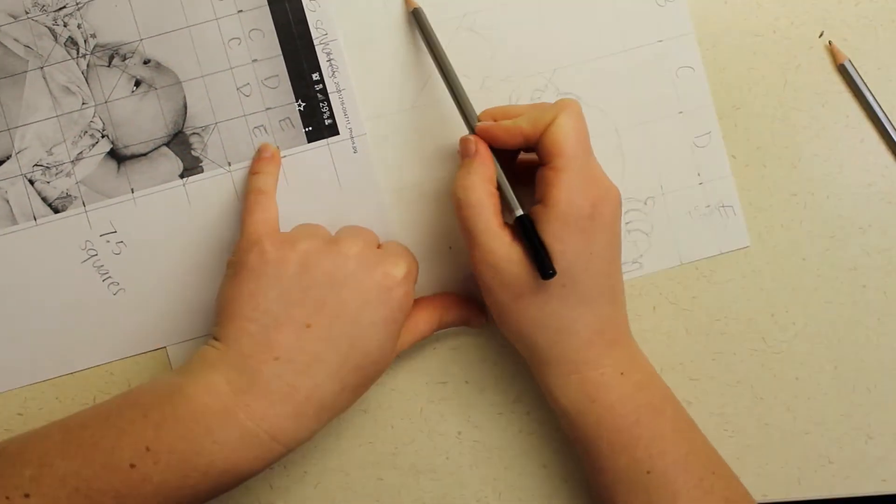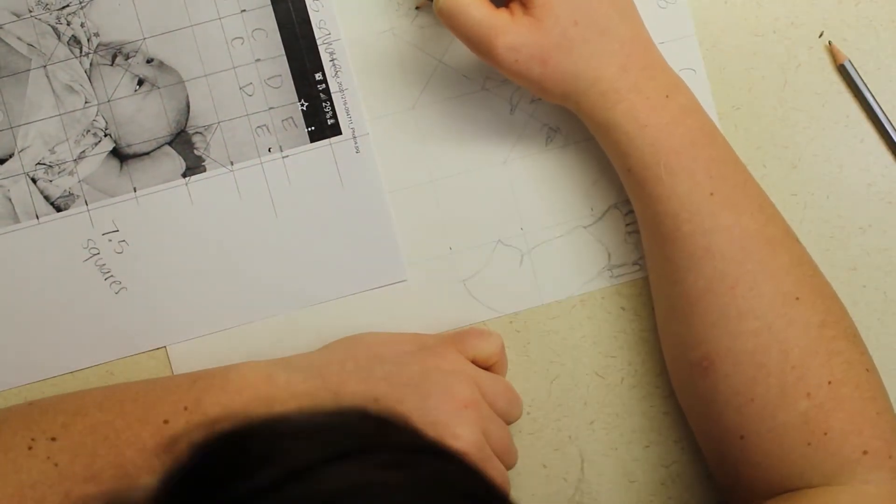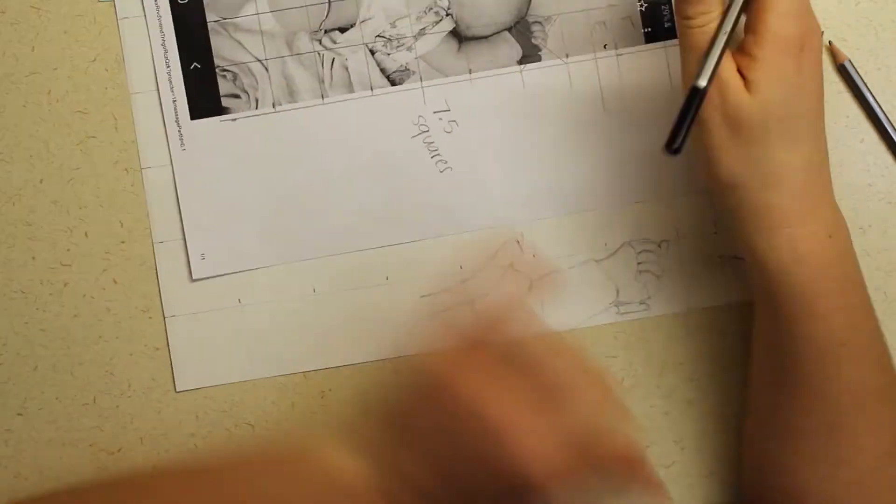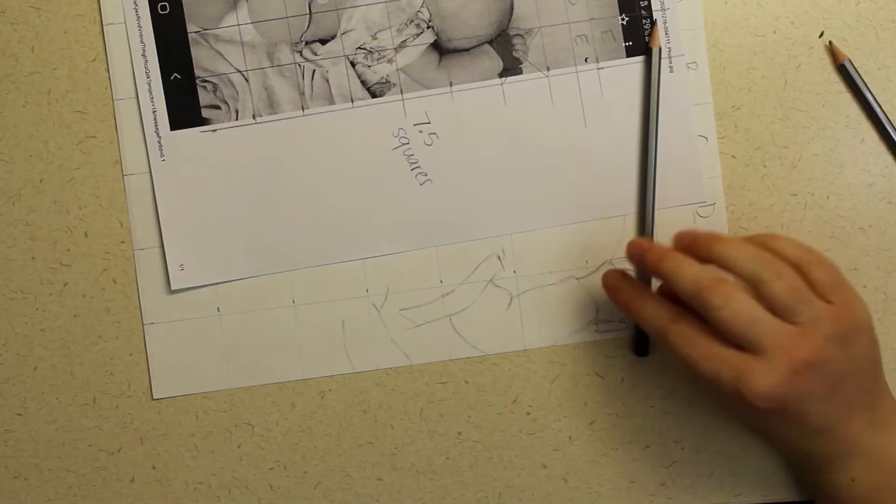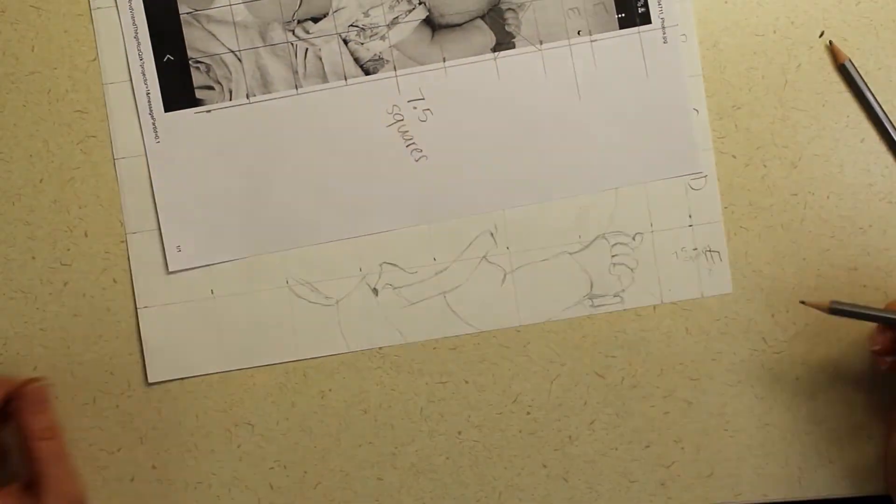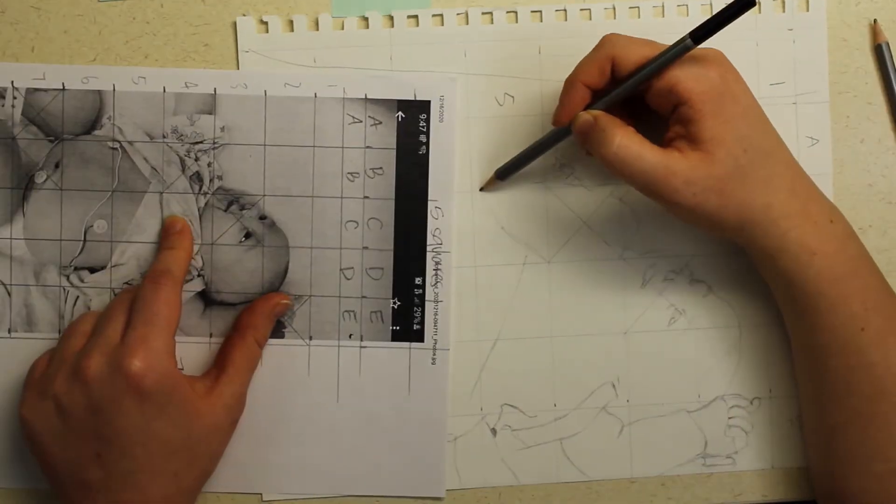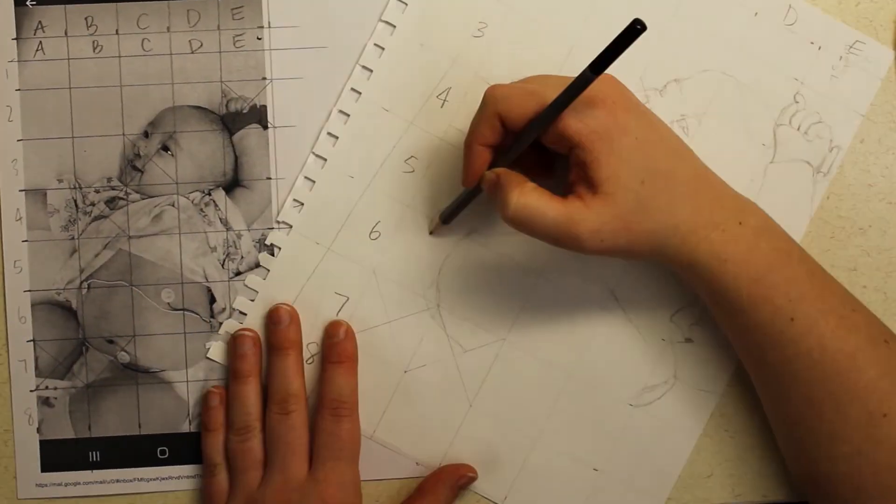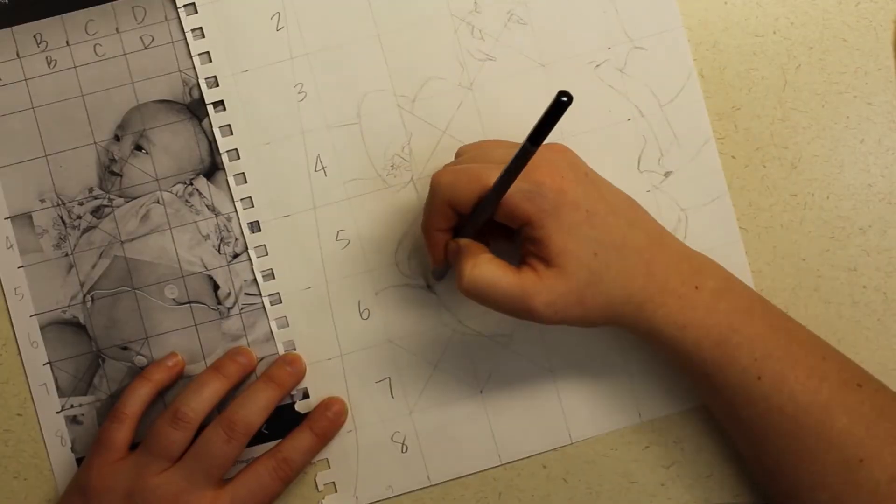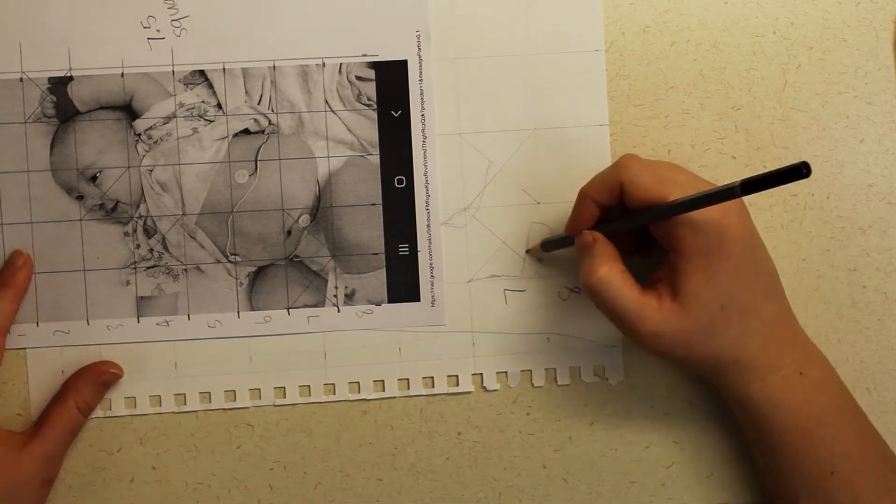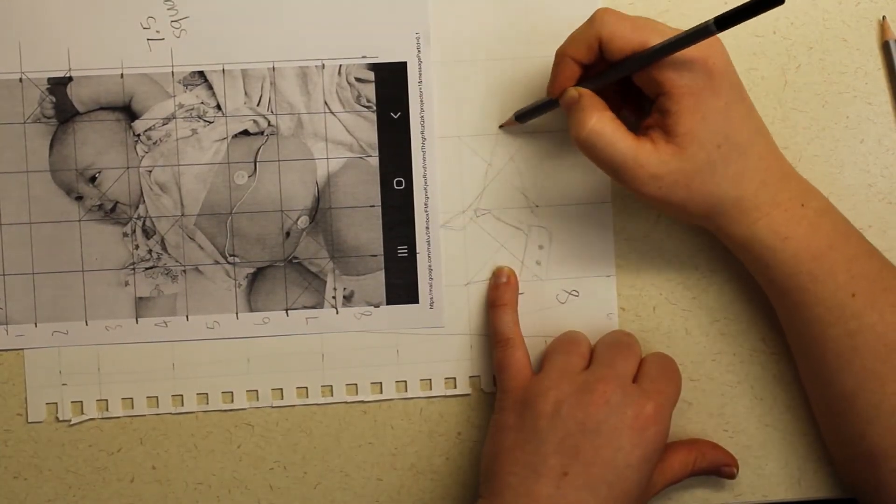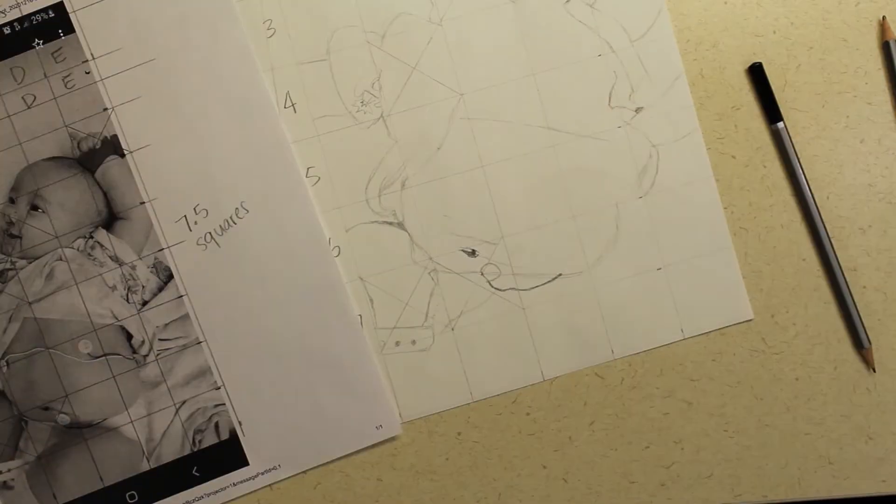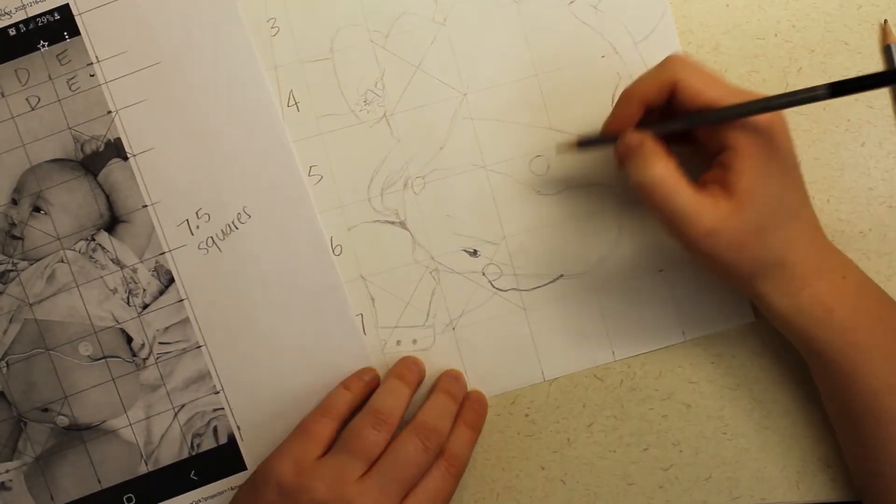What you're looking for here is where the lines intercept the grid. So for example, if you see a line that is about halfway up in your grid, you're going to put your line about halfway up. If it's a little less than halfway, you do yours a little less than halfway, etc. Another thing to really look for is the angles. The angles are going to be the same from your reference image to your drawing.